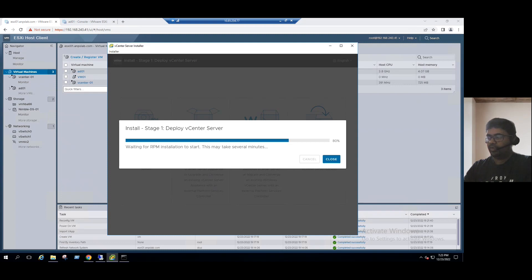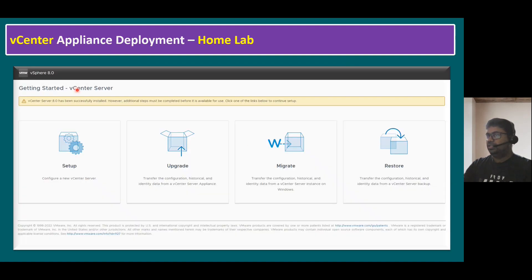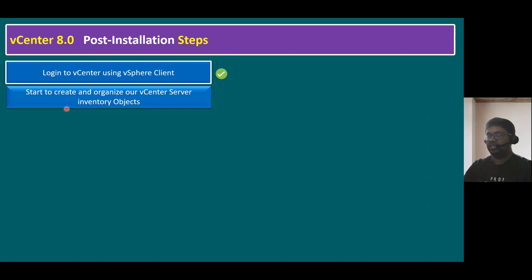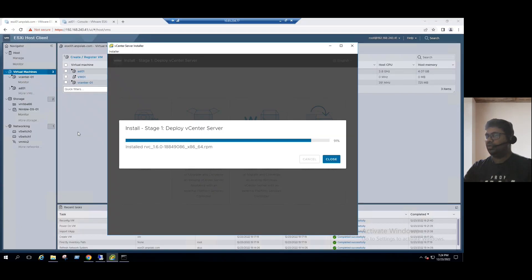In the meantime, let me explain the post-installation steps. Once Stage 2 is complete, vCenter server will be successfully installed with additional configuration steps needed. We'll log into vSphere client, create the vCenter inventory objects like data centers, assign a vCenter license — in our lab we'll use evaluation mode — and enable vCenter shell and SSH. The installation is at 91-92%, almost finished.